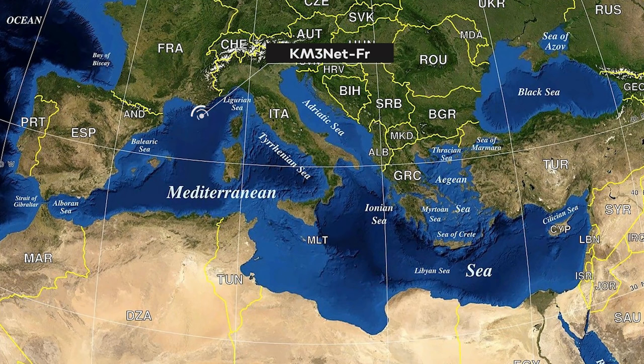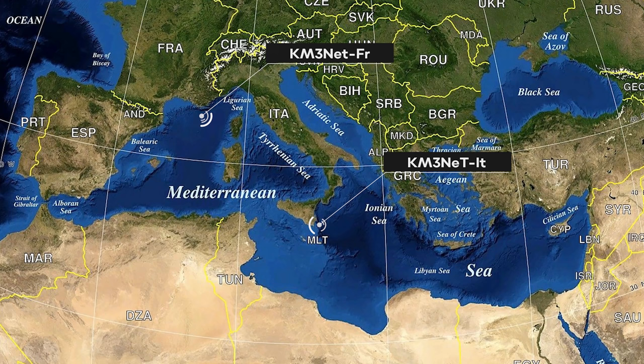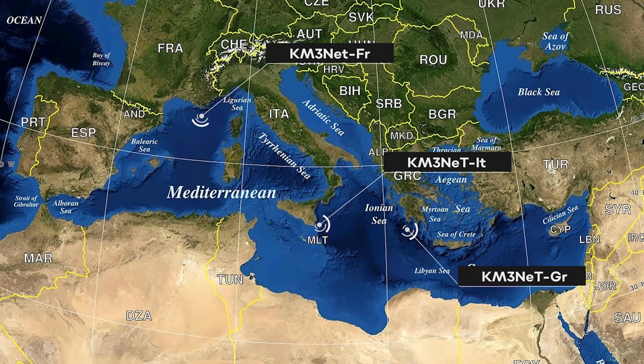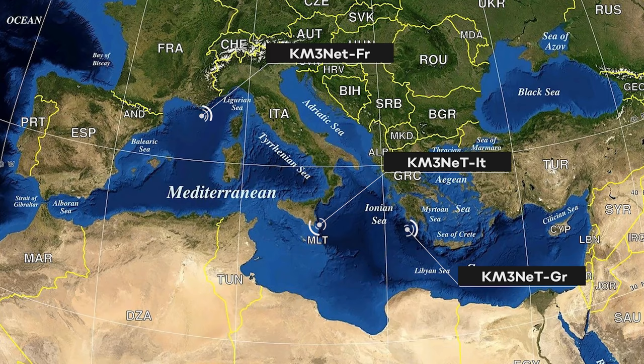KM3NET FR off Toulon, France, KM3NET IT in Italy, Capo Passero, and KM3NET GR off Pylos, Greece. As you can see, science has the ability to link cities that apparently don't have anything in common. This is what we mean when we say that science is an instrument of peace among countries and people.